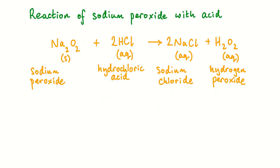Sodium peroxide can also react with dilute acids. When sodium peroxide reacts with acids, the corresponding salt and hydrogen peroxide are formed. For example, the reaction with hydrochloric acid would produce sodium chloride and hydrogen peroxide solutions.